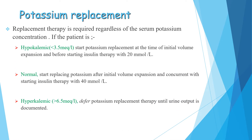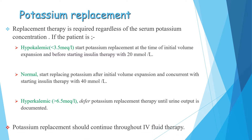Replacement therapy is required regardless of serum potassium concentration in DKA. If the patient is hypokalemic, start potassium replacement at the time of initial volume expansion and before starting insulin therapy with 20 mmol/L, because insulin causes movement of potassium intracellularly, which causes further worsening of hypokalemia. If serum potassium is normal, start replacing potassium after initial volume expansion and concurrent with starting insulin therapy at 40 mmol/L. If hyperkalemic, defer potassium replacement until the patient has urine output. Potassium replacement should continue throughout IV fluid therapy for 24 to 48 hours.